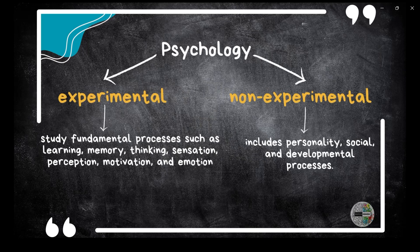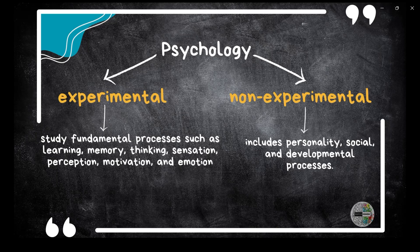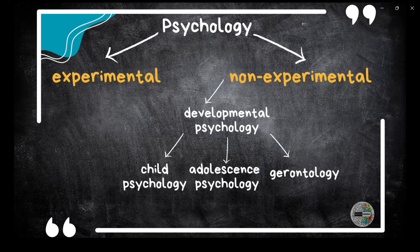Like other sciences, psychology also started with basic branches which were classified as experimental and non-experimental. The experimental psychologists are primarily engaged in basic research and study fundamental processes such as learning, memory, thinking, sensation, perception, motivation, and emotion using the experimental method. They investigate how behavior is modified, how people retain these modifications, the processing of information and thinking, how human sensory systems work, and the factors that urge and give direction to behavior. The non-experimental branch included personality, social, and developmental processes.